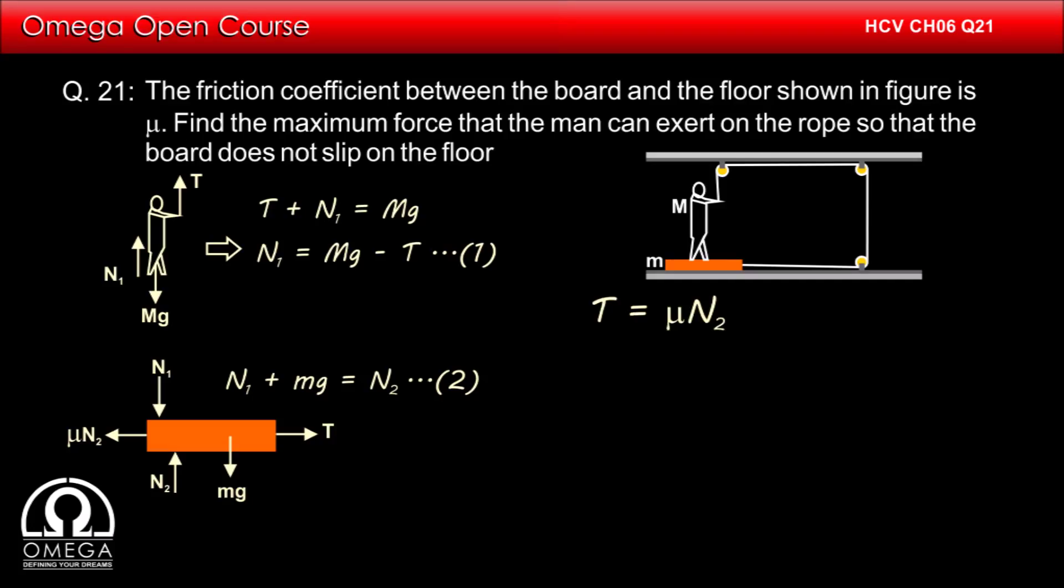Putting the value of N2 from equation 2, we get T equals mu times N1 plus mg. Putting the value of N1 from equation 1, we get T equals mu times Mg minus T plus mg.